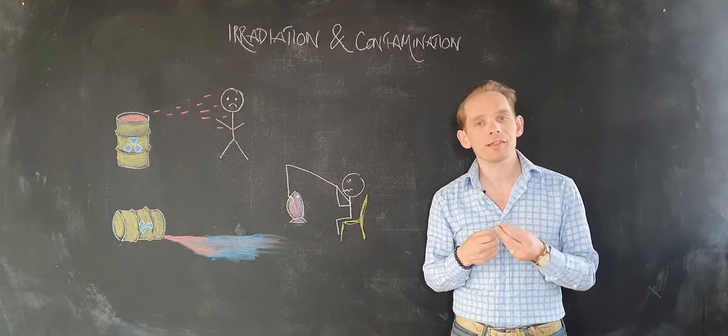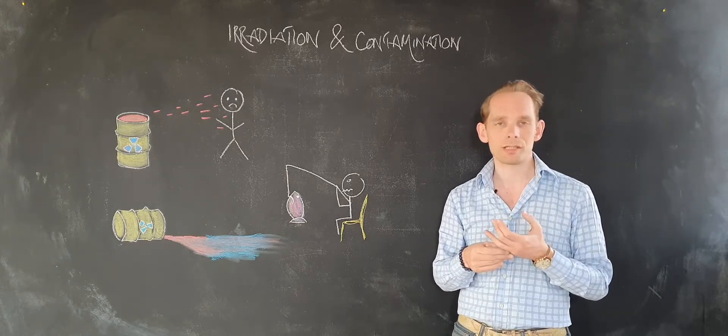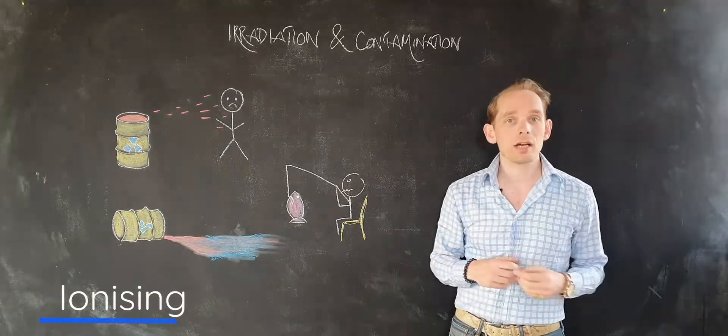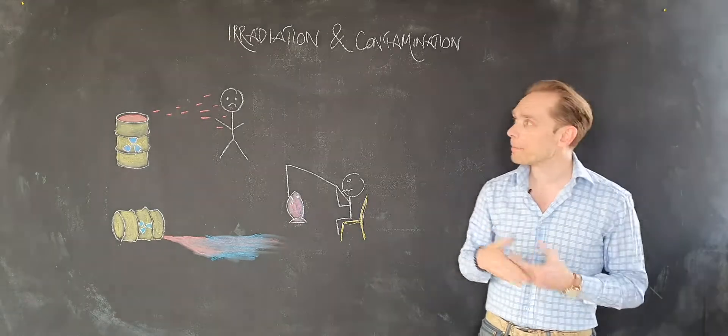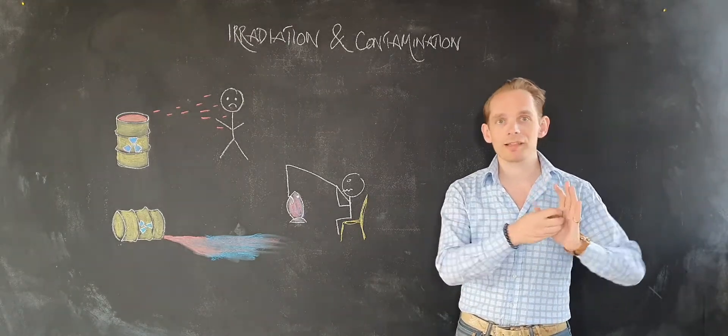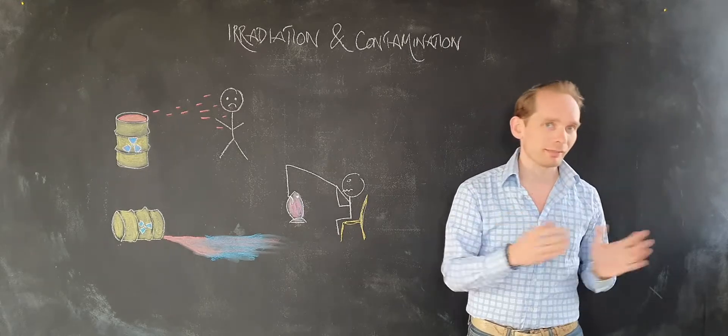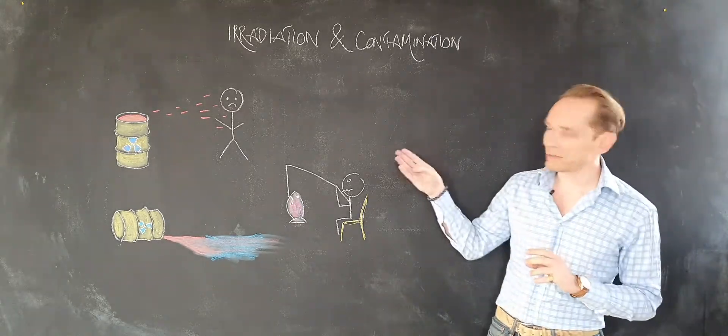But even in those situations it has to be done in a very controlled way to limit potential damage because these ionizing particles are going to cause damage to cells, to living things, but they're going to have limited damage. They're going to hit the cell, maybe cause damage, that's it, they're gone. That's irradiation.